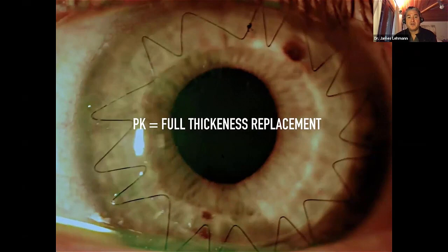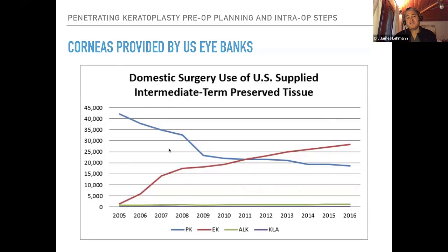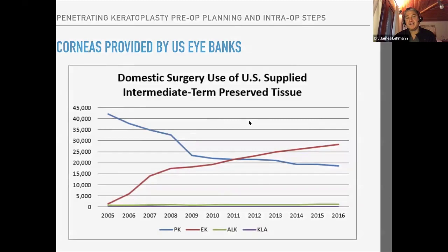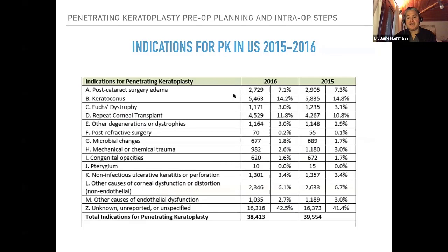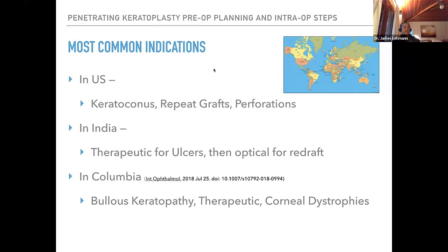PK stands for a full thickness replacement of the cornea, and the goal is to clear the visual axis and give the patient usable vision. In the United States, there are about 50,000 grafts done each year. Looking back to 2005, the vast majority were penetrating keratoplasty, but we're now down to under 20,000 full transplants a year. We do more endothelial transplants than full transplants now. The majority of indications in 2016 were for keratoconus and repeat transplants — and in the US specifically, keratoconus, repeat grafts, and perforations top the list.